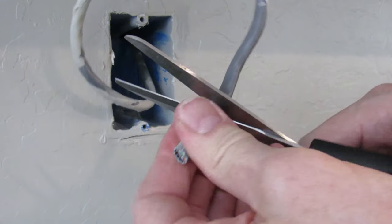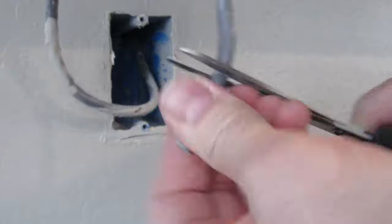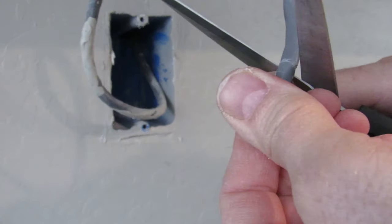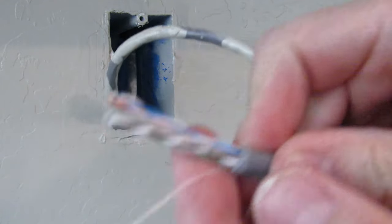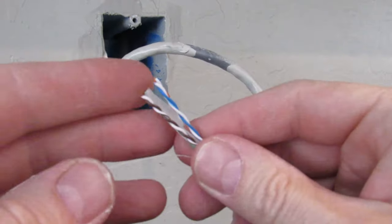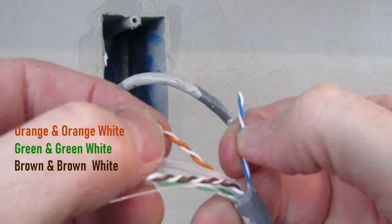Now you're going to cut back the wires a little bit, strip them back about two inches to expose all the wires. Just be careful you don't cut the wires inside. There we go. The brown brown white, green green white, orange orange white, and blue blue white.